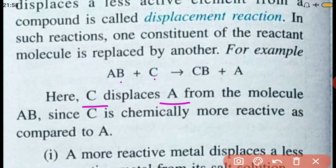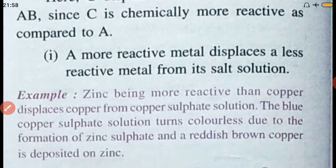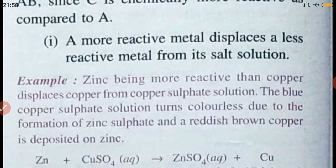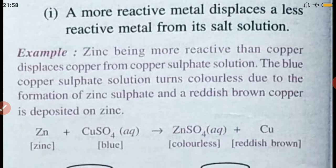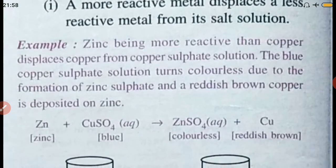Example one: a more reactive metal displaces a less reactive metal from its salt solution. Zinc, being more reactive than copper, displaces copper from copper sulfate solution. The blue copper sulfate solution turns colorless due to the formation of zinc sulfate, and reddish brown copper is deposited on zinc.